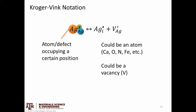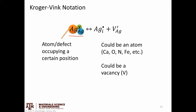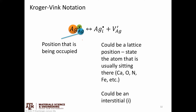The Ag here is talking about what atom or defect is occupying a certain position. So in the first term on the left-hand side, we're talking about silver. The subscript is talking about the position that's being occupied. So on the left-hand side, we're thinking about a silver that's sitting on a silver position. Alternatively, we can have a silver sitting on an interstitial position, or a vacancy sitting on the silver position in the lattice.